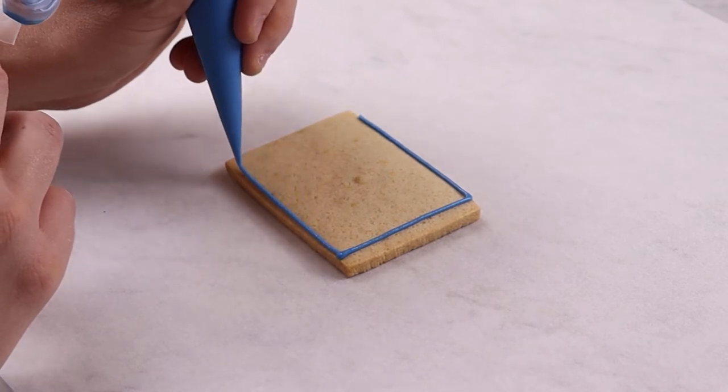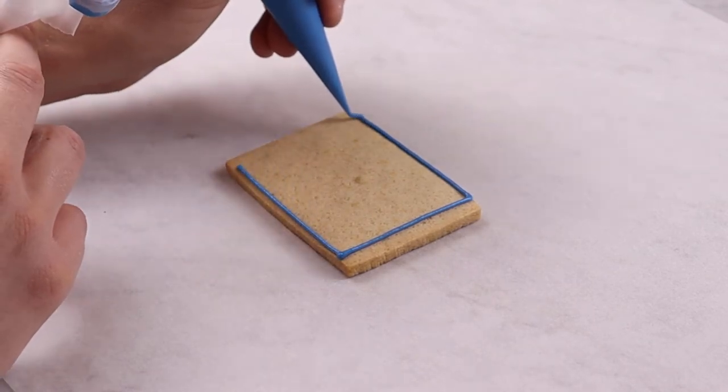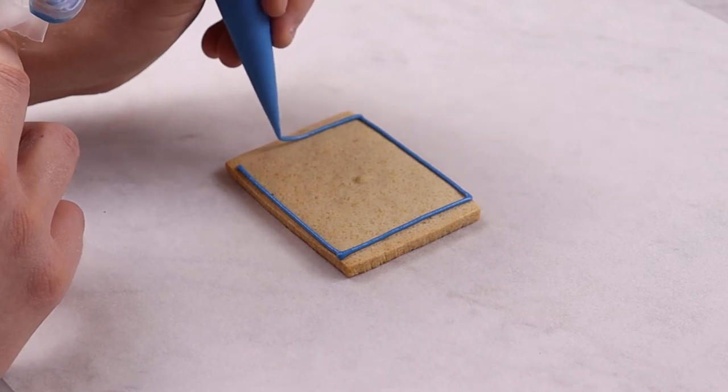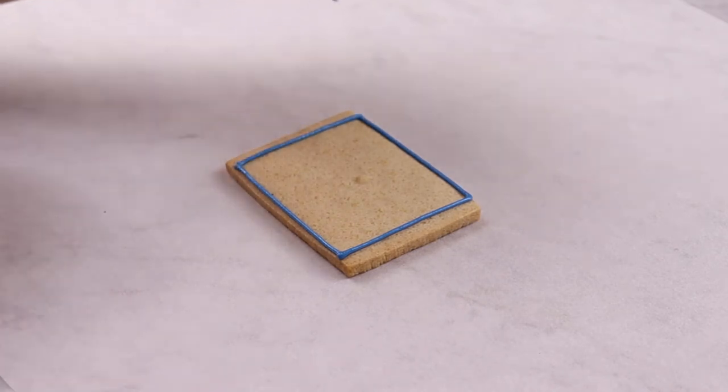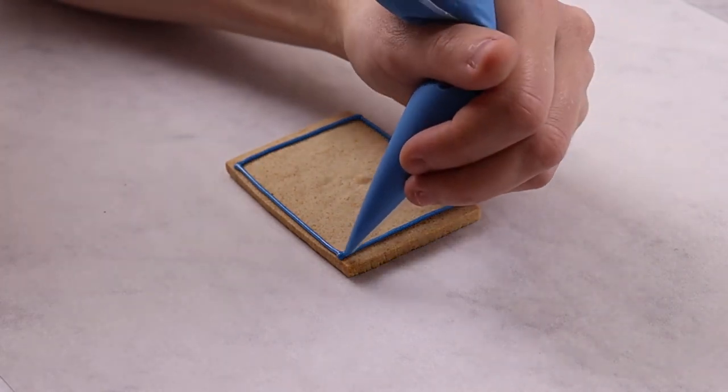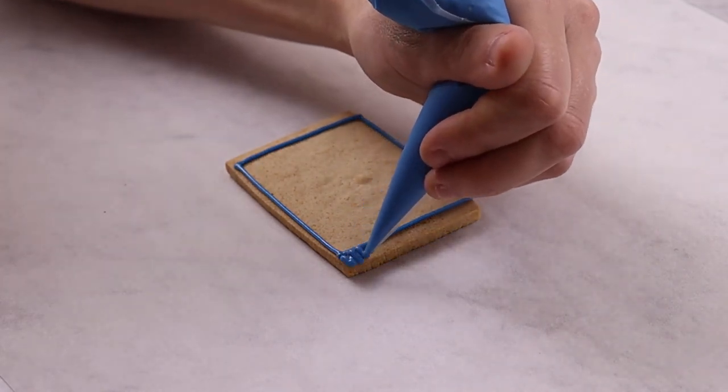We always use piping bags to apply line icing to biscuits. The best thing about using piping bags is that you can cut the tip of the piping bag as thick or as thin as you like so that you can control the width of the line icing.